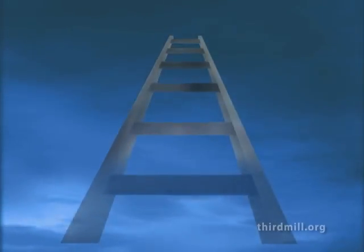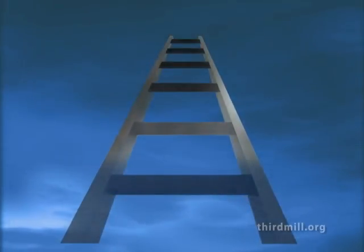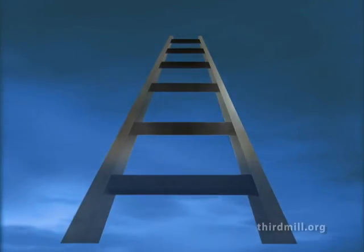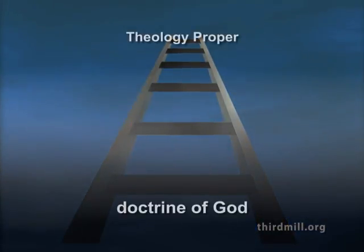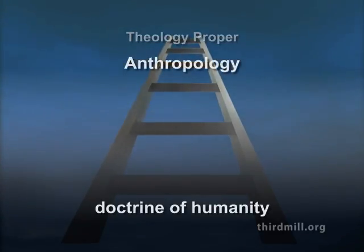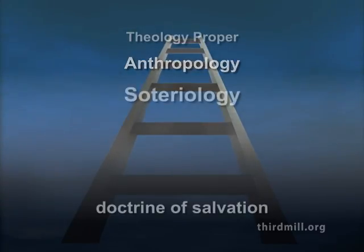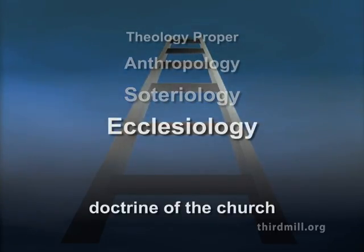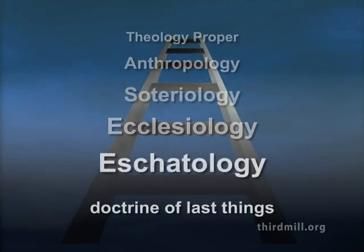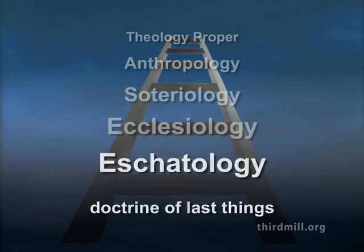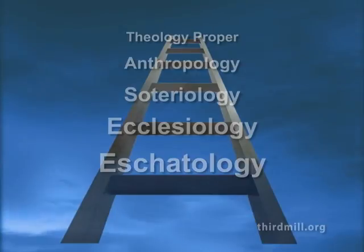The topics of traditional systematic theology have developed into a fairly stable set of concerns. For the most part, systematicians first address theology proper — the doctrine of God. Then they turn to anthropology, the doctrine of humanity, and focus especially on humanity's need for salvation. Soteriology follows, the doctrine of salvation. Then ecclesiology, the doctrine of the church, receives attention. And finally, eschatology, the doctrine of last things. From time to time, even biblical theologians have summarized the theology of the Old Testament following these basic categories, and this has occurred for at least two reasons.